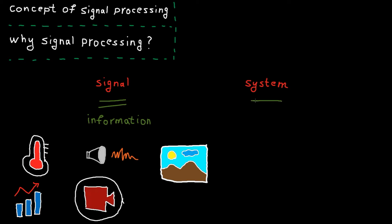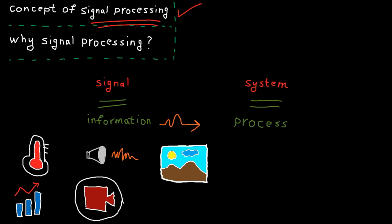Now what is a system? A system is something that can process signals or information. The act of processing a signal using a system is called signal processing.